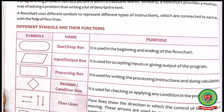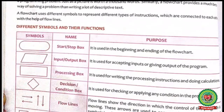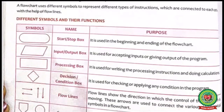The first one is the start-stop box. This box is used at the beginning and ending of the flowchart. The second one is the input-output box, which is used for accepting inputs or giving output of the program. The third one is the processing box, used for writing instructions and doing any type of calculation.